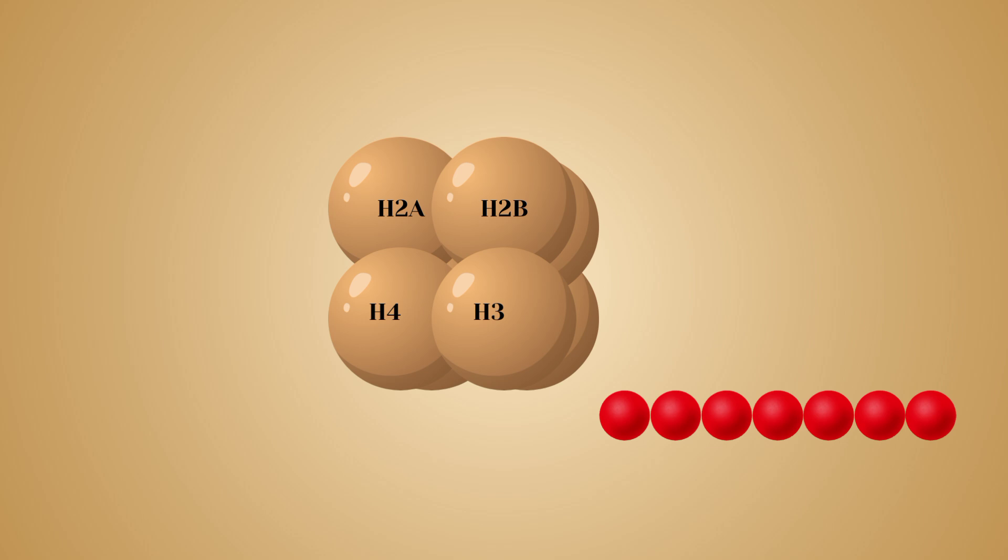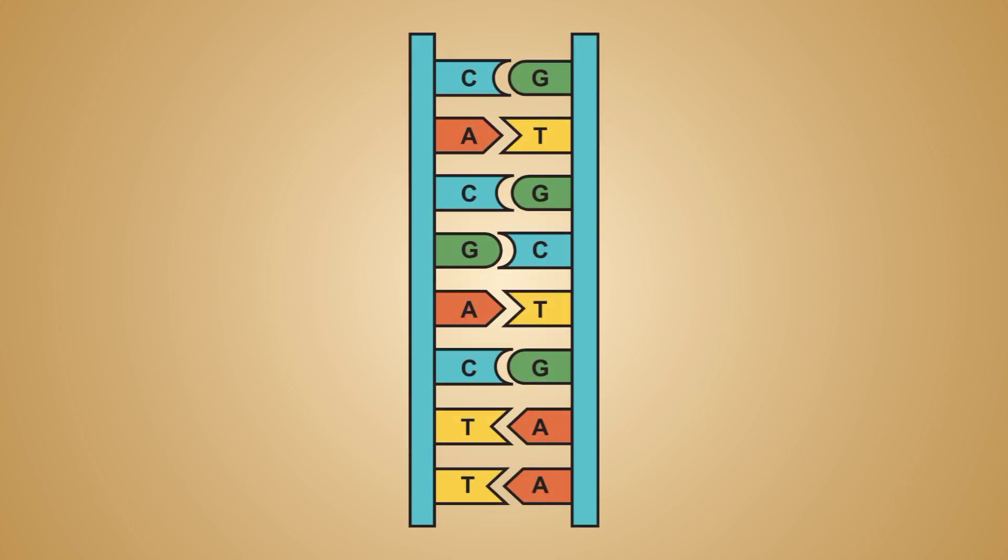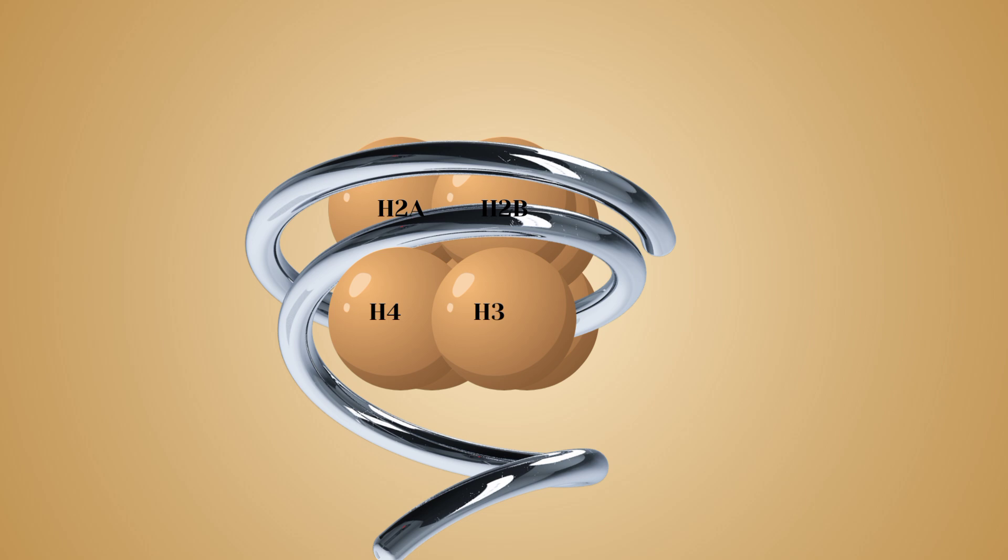The nucleosome core has positively charged amino acids and hence has a positive charge. DNA is negatively charged due to the presence of phosphate groups in nucleotides. Due to opposite charges, DNA winds around the nucleosome core.